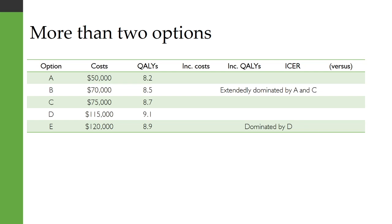Let's take a look at this example with five different options. First, we can see that option E is dominated by option D, because it's more expensive and less effective in terms of QALYs generated. Next we would notice that B is extendedly dominated by A and C — you can check that for yourself. That means that our cost-efficiency frontier is A, C, and D. For option A, we don't calculate incremental costs, QALYs, or an ICER — we say that's the referent strategy.